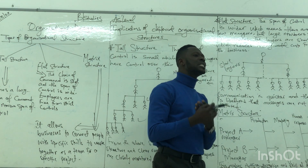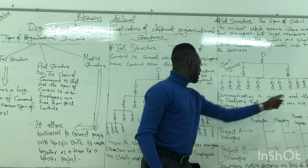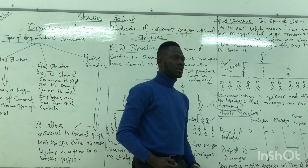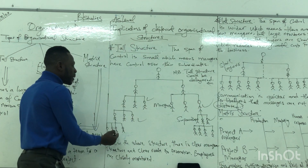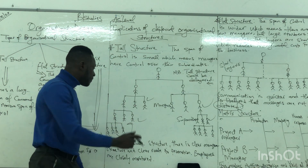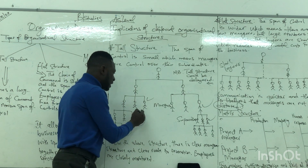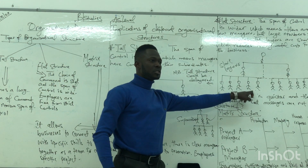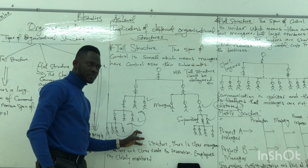Communication is quicker in a flat structure, and messages are less likely to be distorted. In a flat structure, the subordinate just has to inform the manager, and the manager informs the director. But in a tall structure, information might not reach the top for two weeks, or the message might be reduced or incomplete along the way — someone might forget to say something. Unlike the flat structure, where even the director is closer to the subordinates.